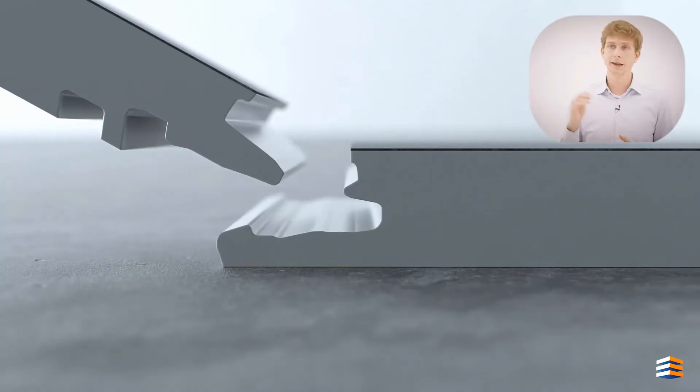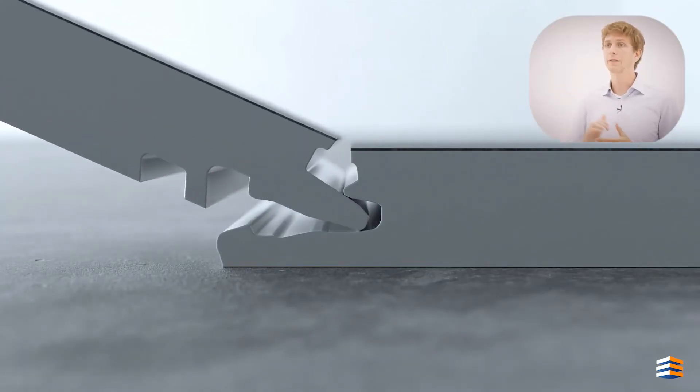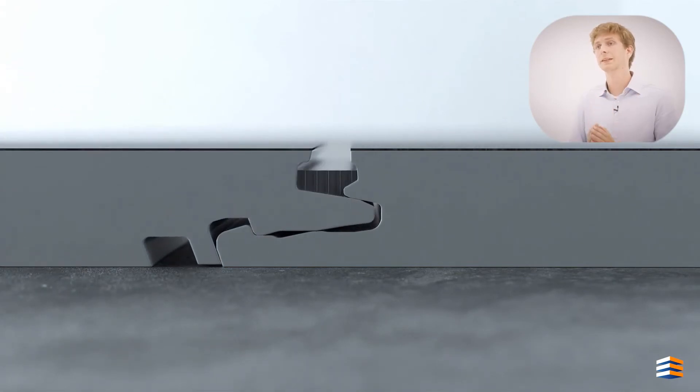The grout ensures that the joint above the locking system is fully closed to any water that might try to penetrate. As you can see in the image, the grout runs through into the locking system, and this is specifically designed in such a way that the grout stays in place.